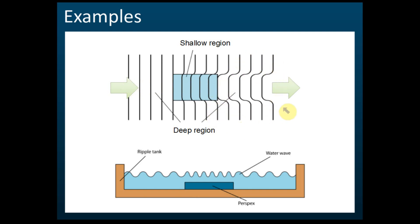After passing through the perspex, the wavefronts look something like this. Initially the wave moved together, but when passing through the shallower region it moves slower, so the center is left behind while the sides move forward. This gives the curved pattern of the wavefronts that we see on the ripple tank screen — showing that at the shallower region the wavelength is shorter and the wave moves slower.